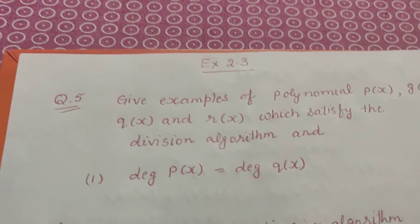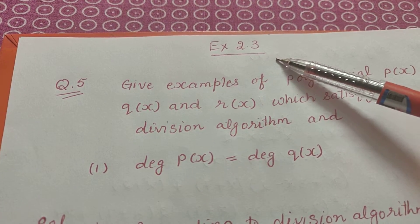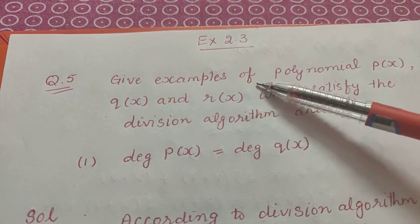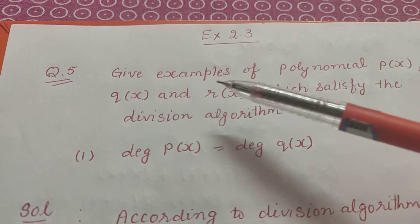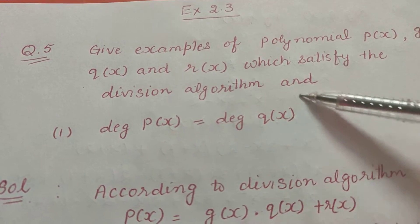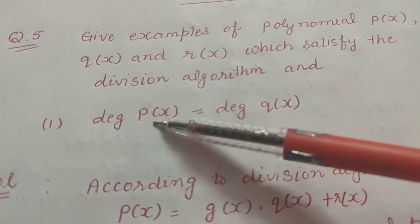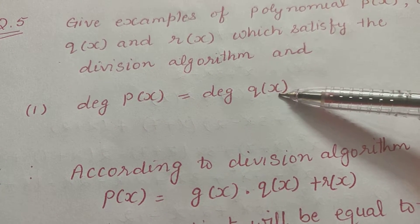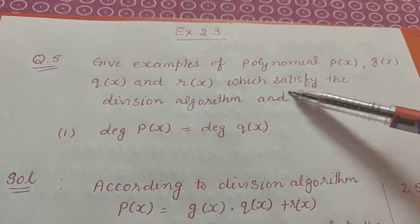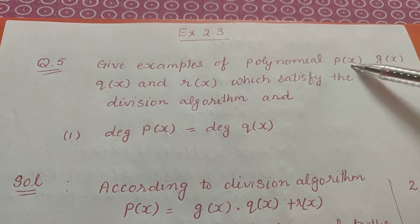In this video we are going to discuss question number 5 of exercise 2.3. In this question you have been asked to give examples of polynomials p(x), g(x), q(x), and r(x) which satisfy the division algorithm and one more condition. There are different parts. In the first part, the condition is that the degree of p(x) should be equal to the degree of q(x). Before starting the solution, you must understand what the question is — you just have to give examples of four polynomials.